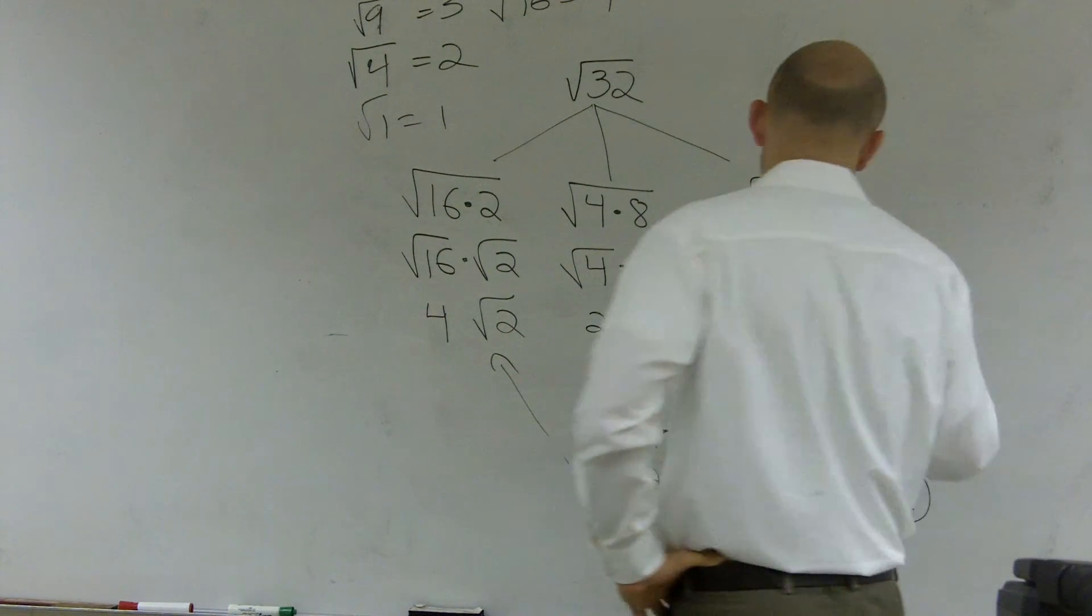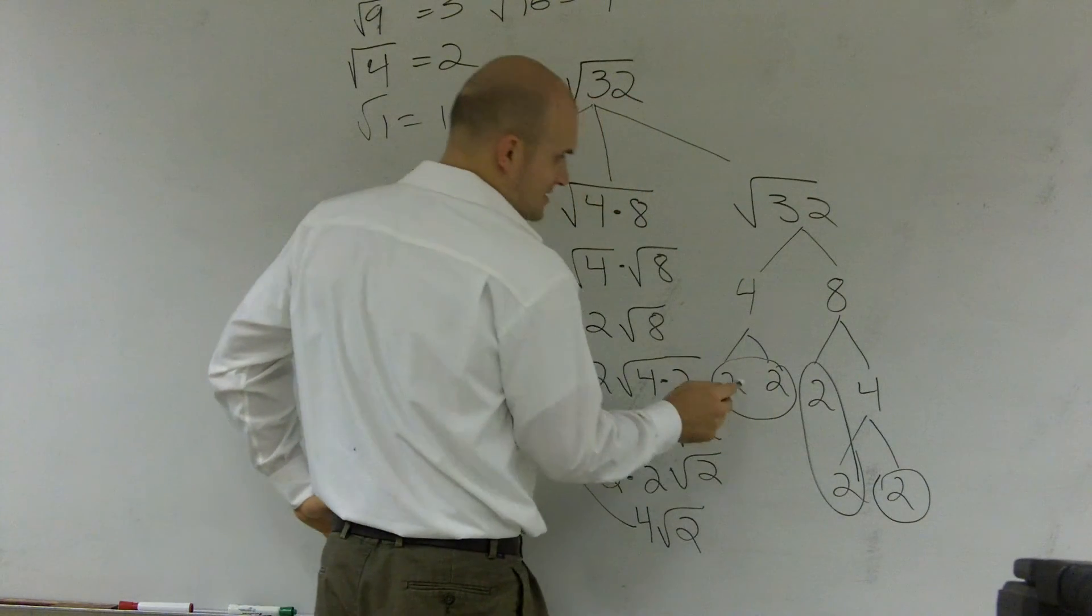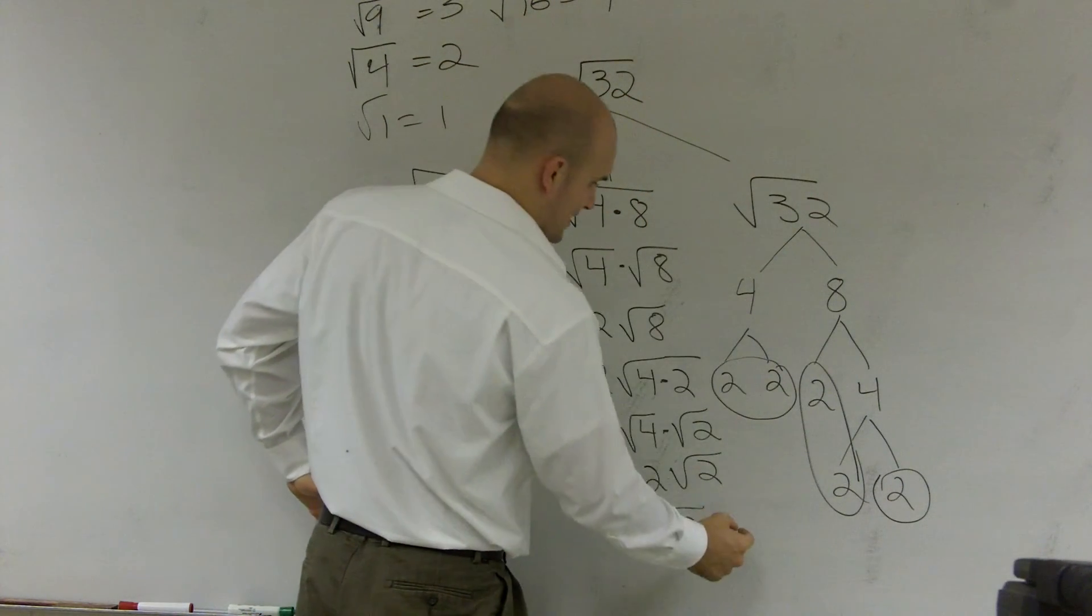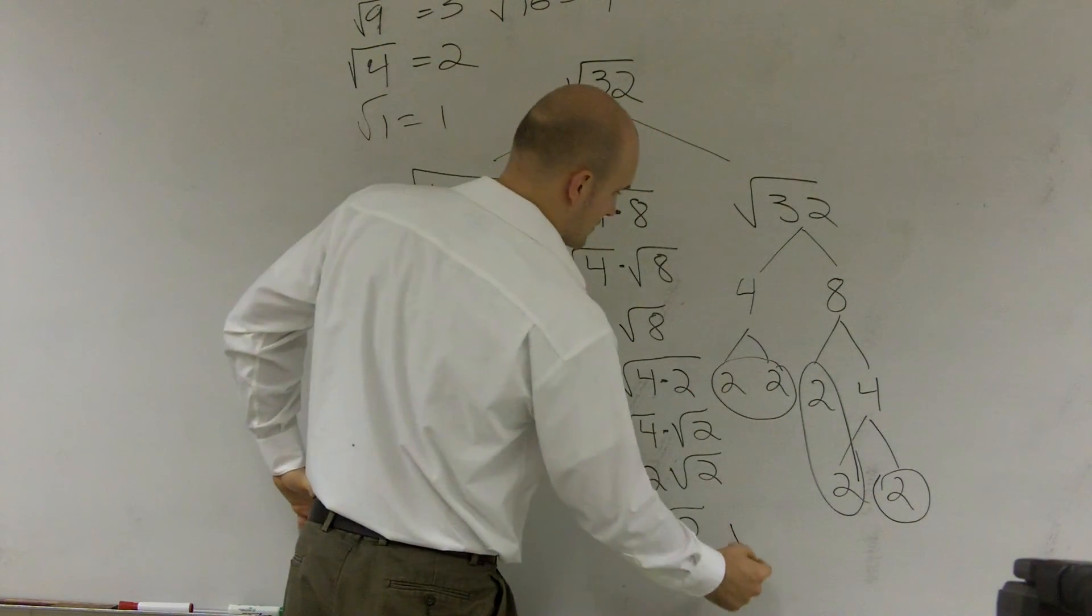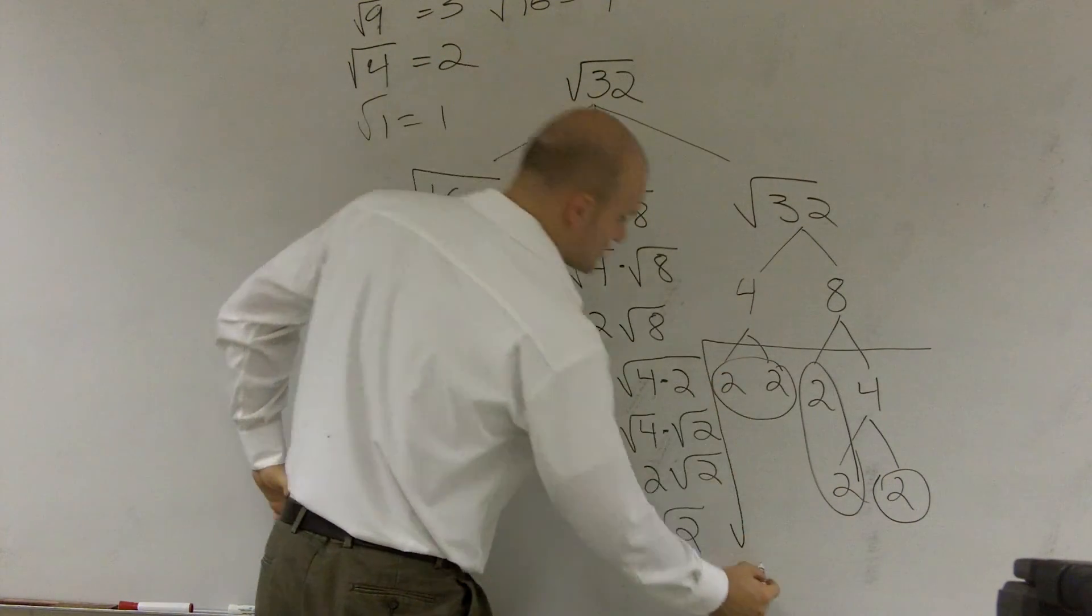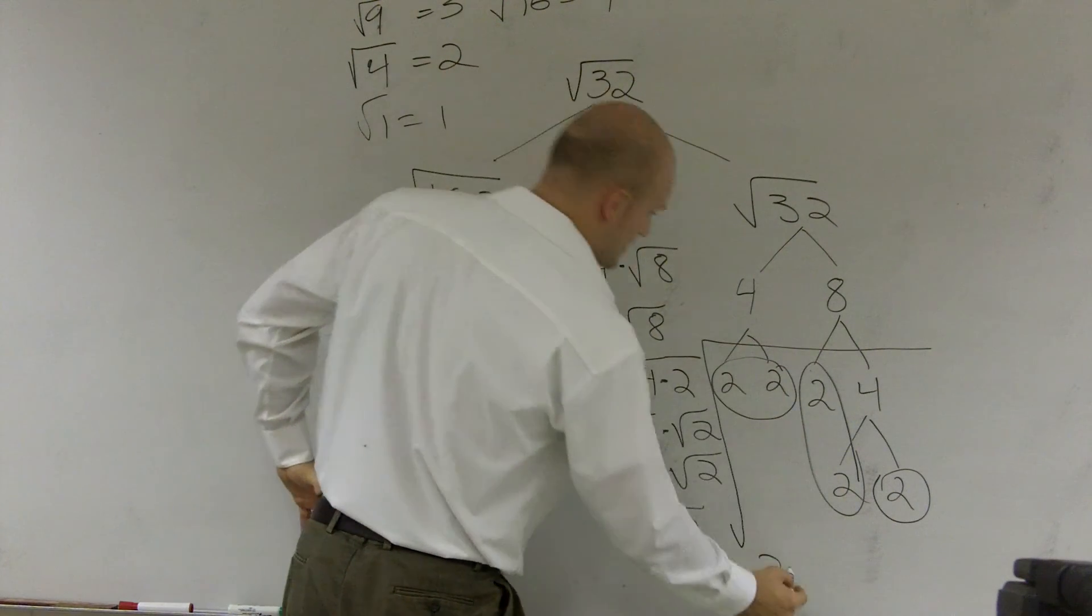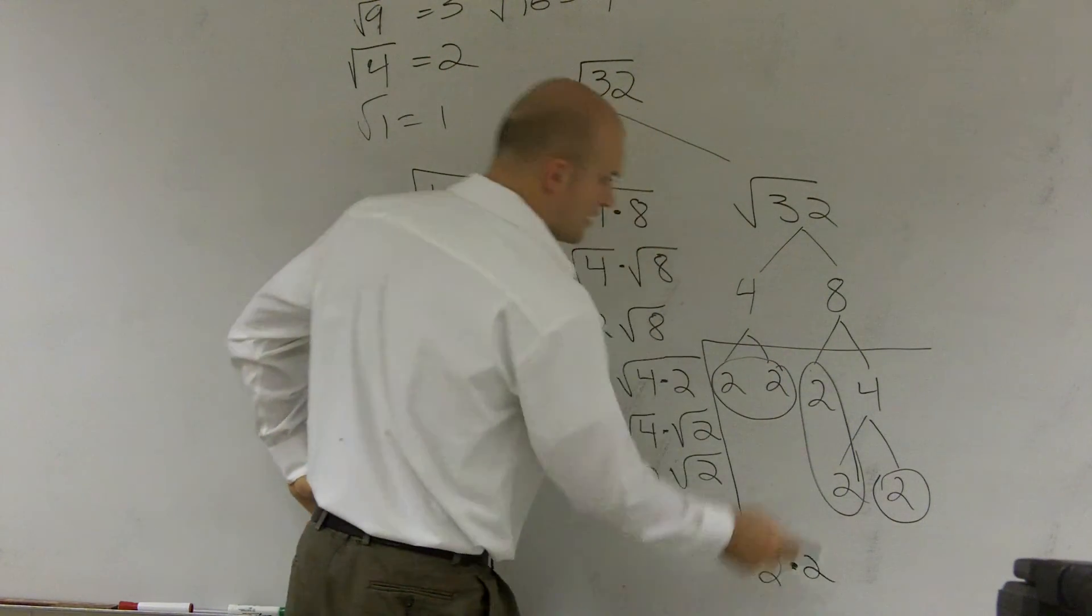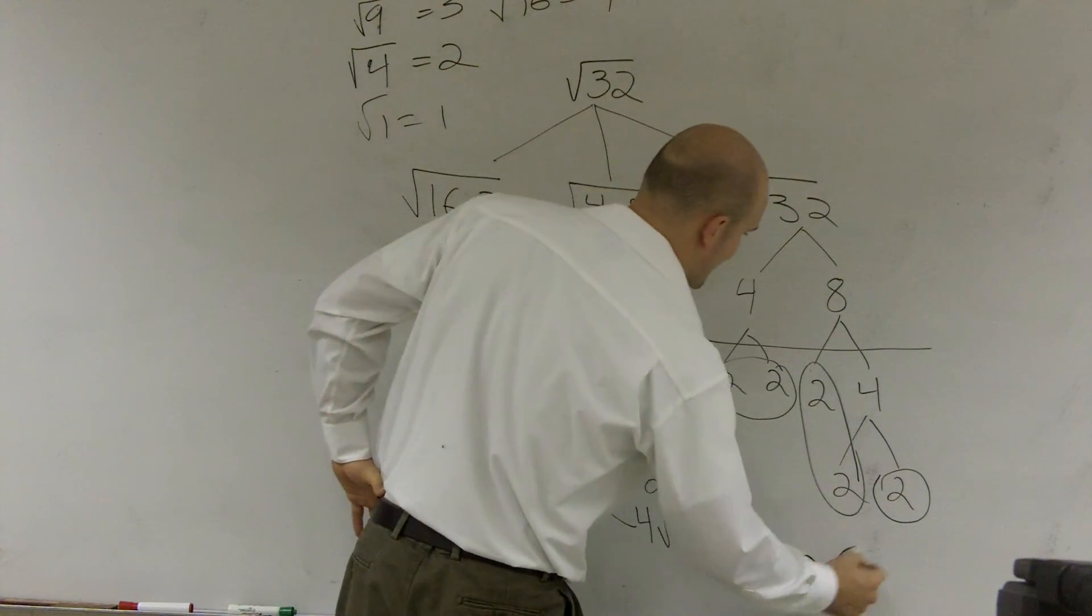So what I really have is, if you can think about this, the square root of 2 times 2 is 2. The square root of 2 times 2 is 2. And then this 2 is still going to be left behind.